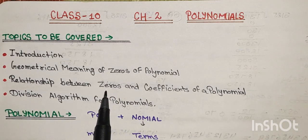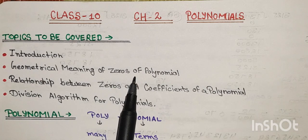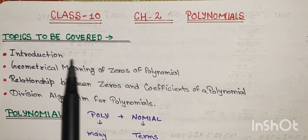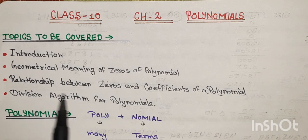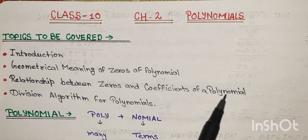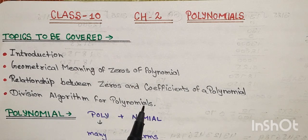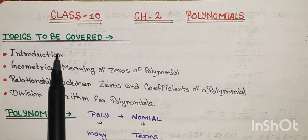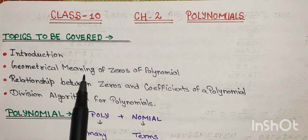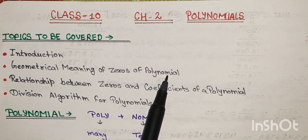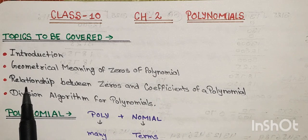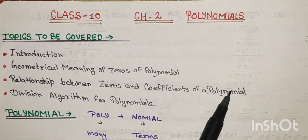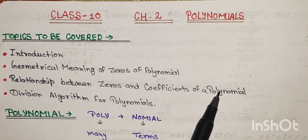Hello students, I am an educator. In today's video, we are going to discuss Class 10 Chapter 2, Polynomials. Main topics of this chapter are: introduction, geometrical meaning of zeros of polynomial, relationship between zeros and coefficients, and division algorithm for polynomials. We have already discussed the introduction and geometrical meaning of zeros in our previous video, which you can watch on my channel's playlist.